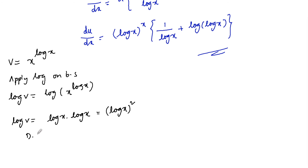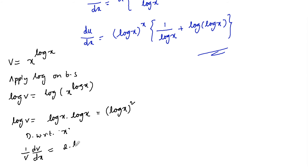Now differentiating with respect to x: 1/v times dv/dx equals differentiation of (log x)^2, which is 2 times log x, and again the differentiation of log x is 1/x.